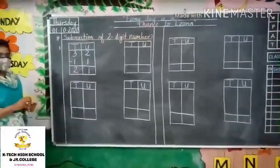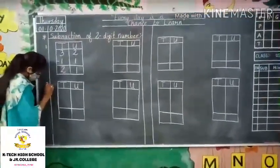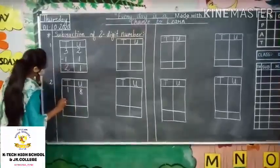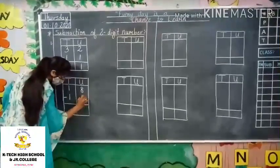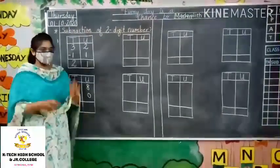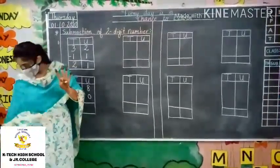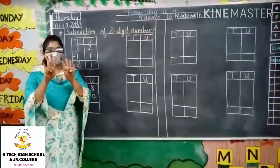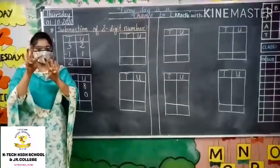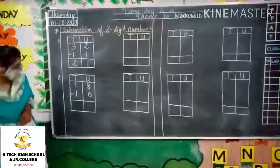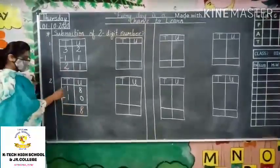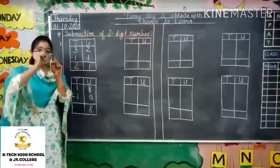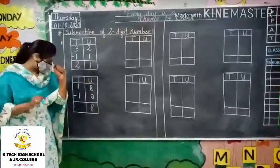Now students we will start with the next sum. Question number two: 18 minus 10. Put up your 8 fingers. Remove 0 fingers — if we remove zero fingers, how many fingers are remaining? Eight. So the answer is 8 in units. Now in tens: 1 minus 1 means remove 1 finger, how many fingers are remaining? Zero. So write zero here.